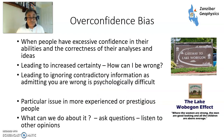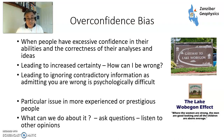Overconfidence bias. This is when people have excessive confidence in their own abilities and correctness in their analysis — the Lake Wobegon effect: all of our children are above average. This leads to increased certainty — how can I possibly be wrong? — and it also leads to ignoring contradictory information, because admitting you're wrong can be psychologically difficult for some people. It tends to be more of an issue with people who are more experienced and prestigious, because admitting you're wrong might be a lot harder for them. So what can you do? Ask questions, listen to other opinions, and if other opinions make more sense than yours, change your mind.